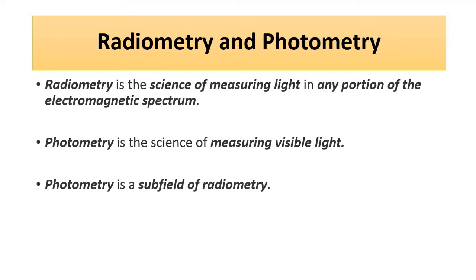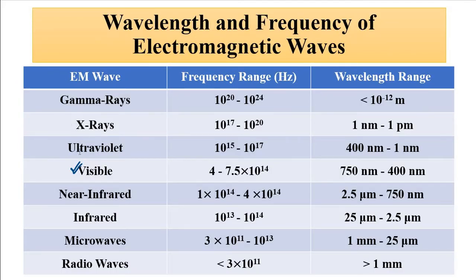Photometry is a sub-field of radiometry. Radiometry is the broader, overall field which takes into account any frequency or wavelength range — gamma, X-ray, ultraviolet, visible, near infrared, infrared, microwaves, radio waves — everything combined. That is radiometry. But only the visible portion of the electromagnetic spectrum — that is photometry. In short, radiometry takes into account all wavelength ranges whereas photometry is concerned only with the visible range.